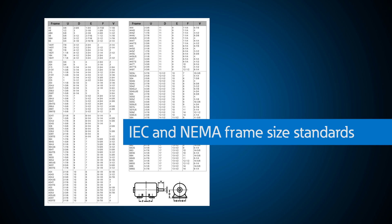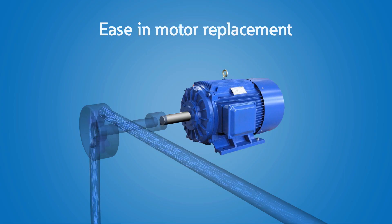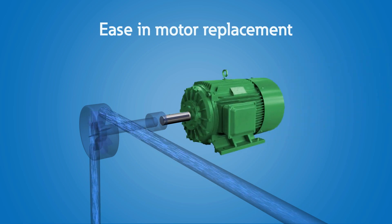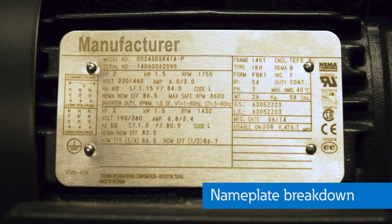Motors come in industry standard frame sizes set by IEC or NEMA. This allows motors to be easily replaced regardless of manufacturer. Because of this, you will only have to replace the motor and not a fan or pump when there is just a motor failure.